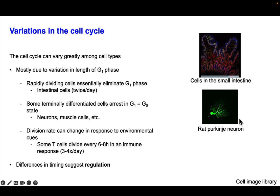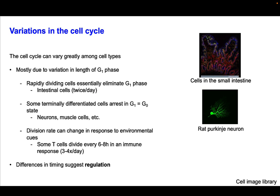Examples of G0 cells include neurons and muscle cells — here I'm showing a rat neuron. There are also cells that can change their division rate in response to an environmental cue. During an immune response, T cells that recognize a pathogen can upregulate their division to every six to eight hours, which is an incredibly fast process. So there's a lot of variability, mostly in the G1 phase, and this altogether suggests that this pathway is regulated.